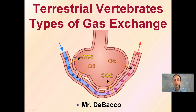Here we're going to look at terrestrial vertebrates and the type of gas exchange that they go about doing. Keeping in mind, cells of animals are going to respire, meaning they're going to require oxygen and they're going to produce carbon dioxide. So there needs to be an efficient way to exchange those two gases to allow those cells to continue to live and survive.